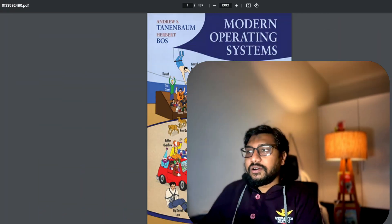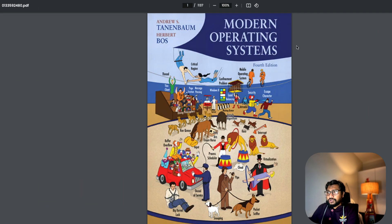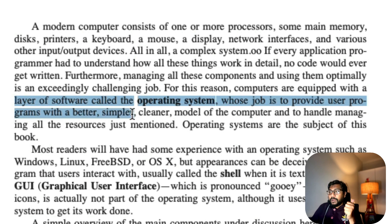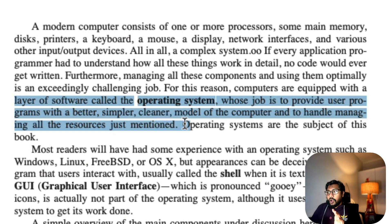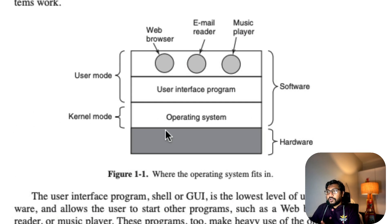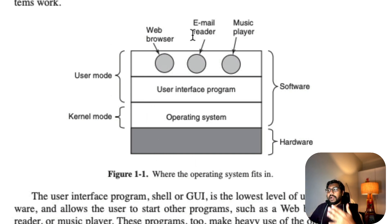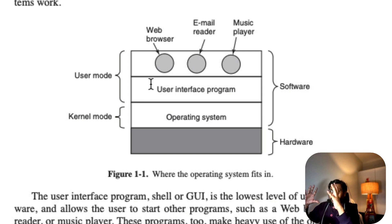Here's a quick introduction to operating systems. This is a book by Andrew Tanenbaum that I learned operating systems from at university. One important thing it says is that computers are equipped with a layer of software called the operating system, whose job is to provide user programs with a better, simpler, cleaner model of the computer and to handle managing all the resources. It talks about kernel mode and user mode — kernel mode is where the operating system operates, the interface between your hardware and everything above it; user mode is where you connect with things like web browsers, email readers, and music players.